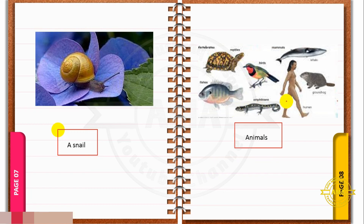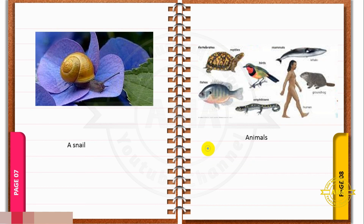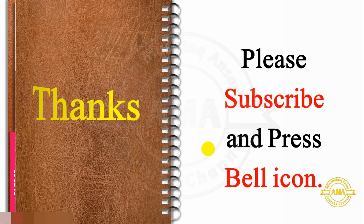Kingdom Animalia mein birds, snail, aur different animals shamil hain. Jaise aap diagram mein dekh sakte hain — insaan, rabbit, shark, pigeon, fishes, reptiles aur crocodiles waghera is mein shamil hain. Aaj ke liye itna hi, inshallah next video mein ek naye topic ke saath milenge, tab tak ke liye Allah Hafiz.